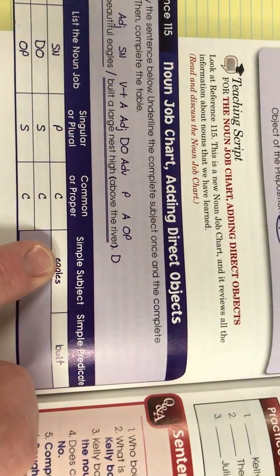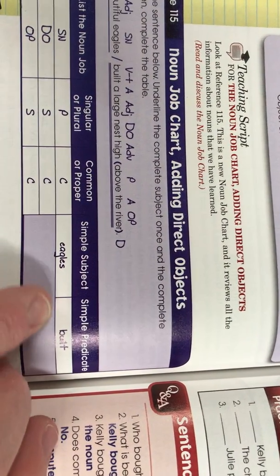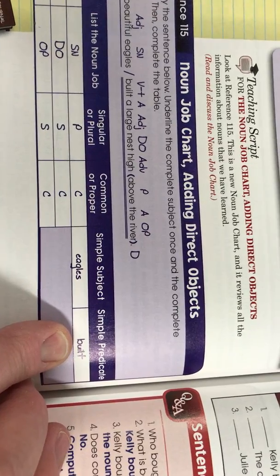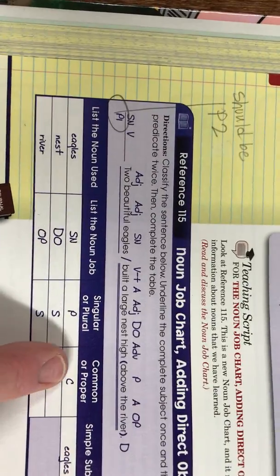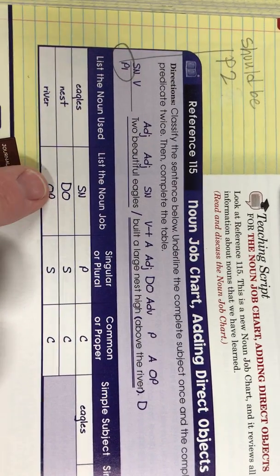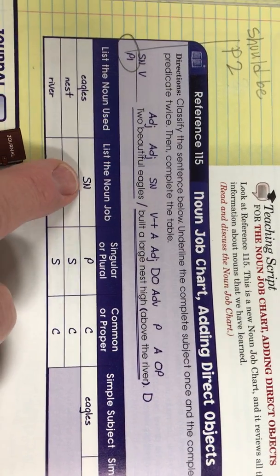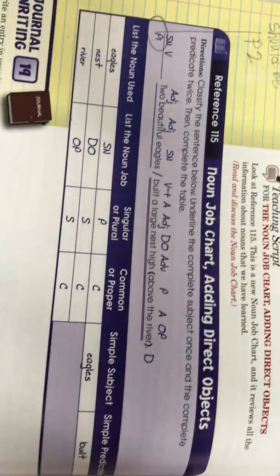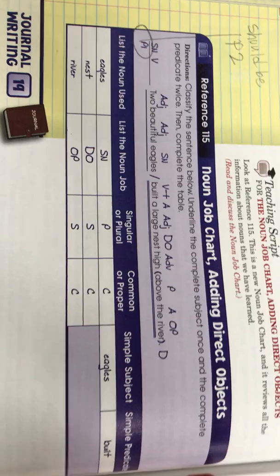You've also done this before where you have eagles for your simple subject and built for your simple predicate. So when you see a chart like this now in your workbook for grammar, you have to stop and think what's the noun job. The noun job could be subject noun, direct object, or object of the preposition.